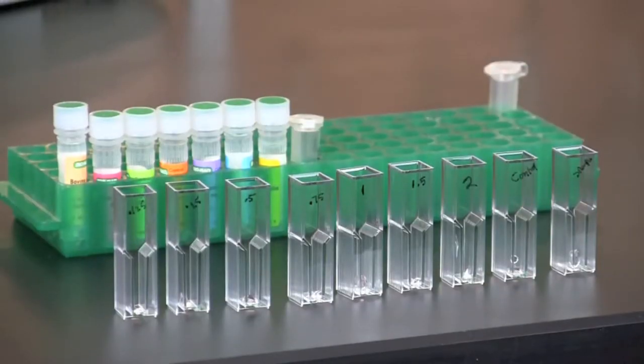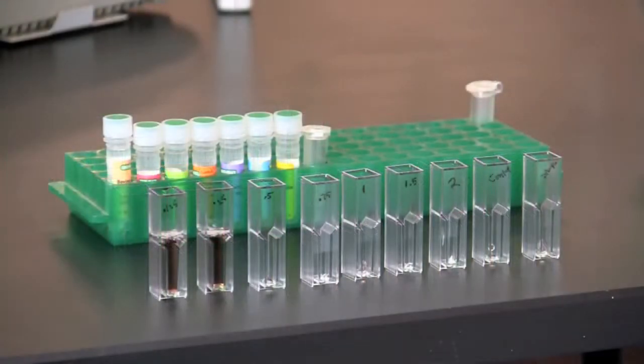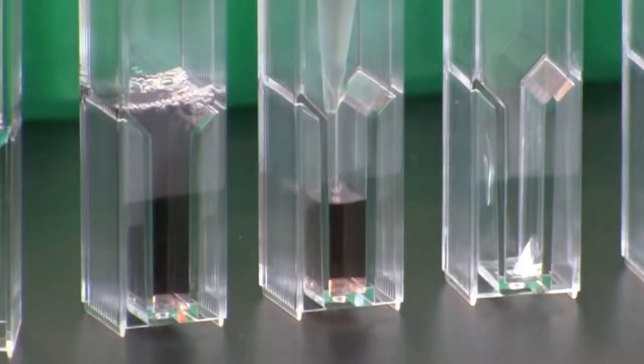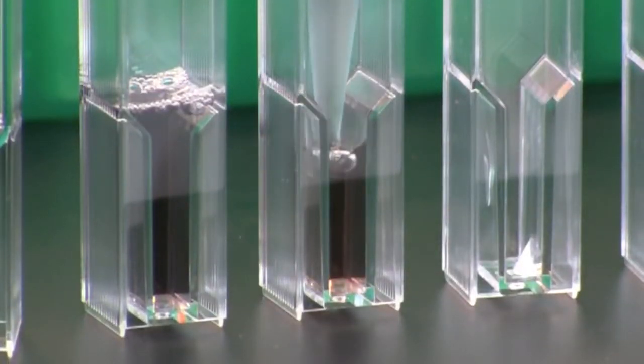Now you are ready to add the Bradford reagent to all of the cuvettes you have prepared including the sample and control. Add 1 milliliter of 1x Bradford reagent to each of the cuvettes. Mix completely by pipetting up and down with the micropipette.